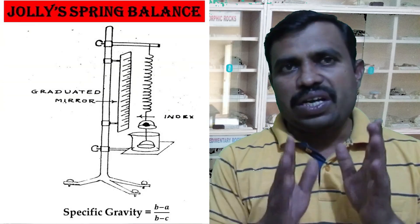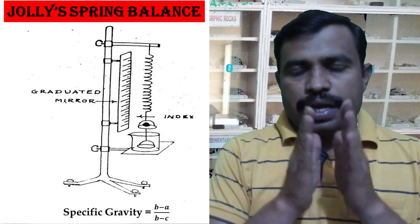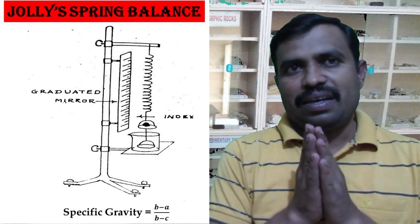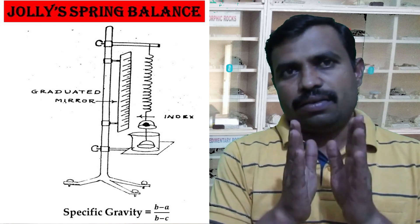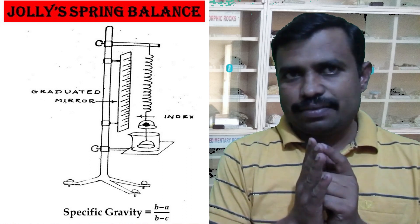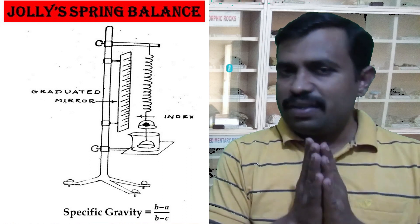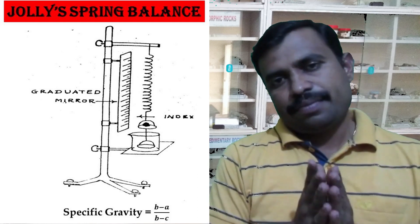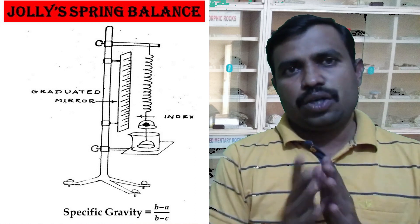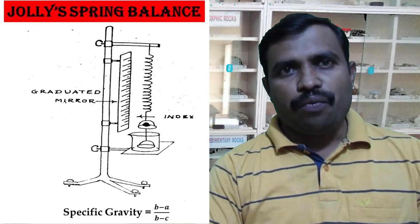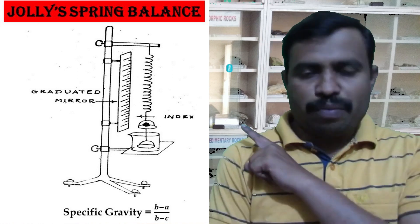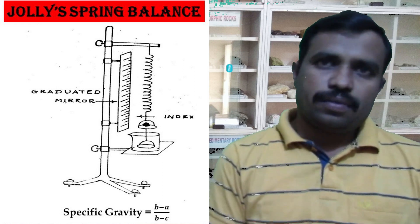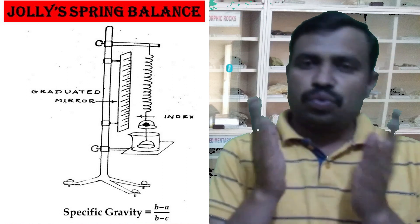The second instrument is called Jolly's spring balance. The specific gravity of small fragments of mineral is determined by this Jolly's spring balance. The instrument consists of a weak spring suspended vertically against a graduated mirror scale. Two pans, one below the other, are attached to the lower end of the spring. The lower pan is always immersed in water.